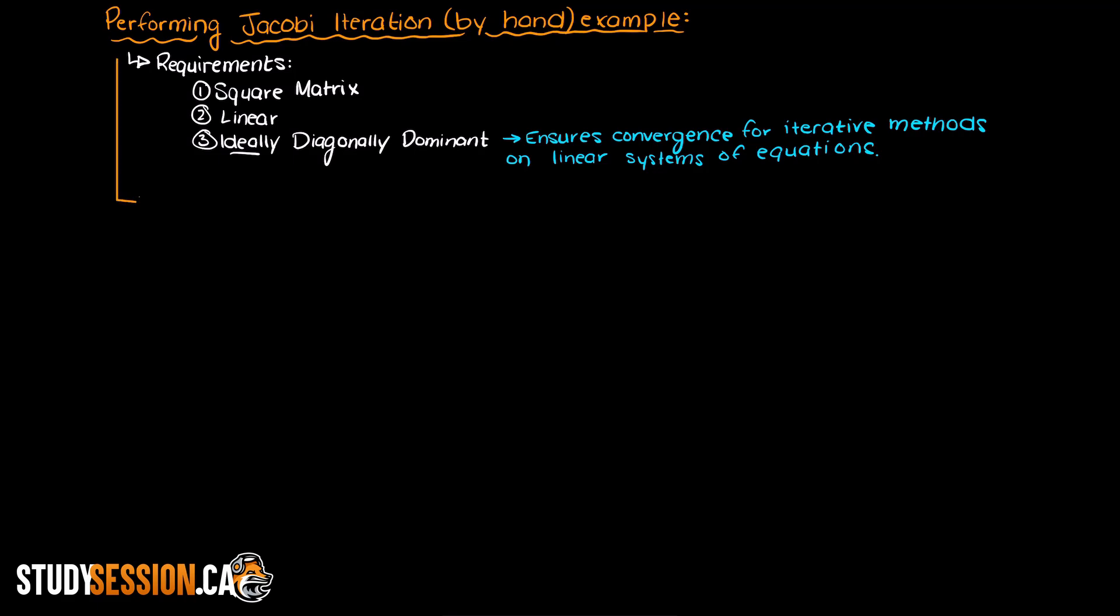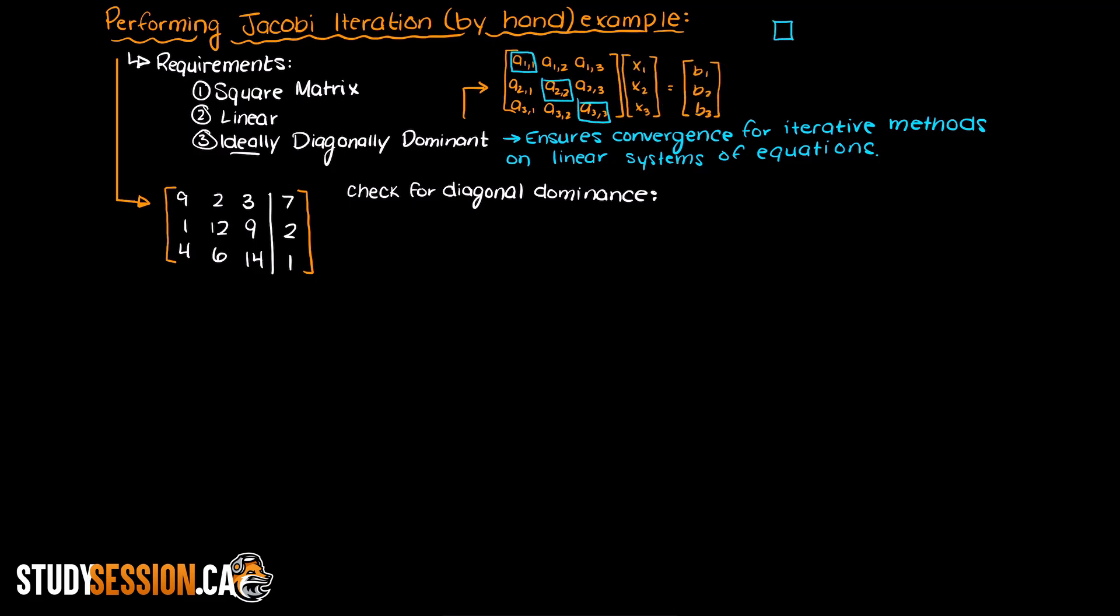Alright, so we need to solve the following matrix using Jacobi iteration. Before we begin going through the steps of Jacobi iteration let's check to see that our matrix is diagonally dominant. A diagonally dominant matrix states that for every row in our linear matrix the diagonal value is greater than or equal to the sum of the rest of the row.